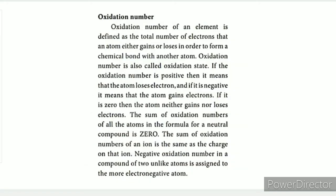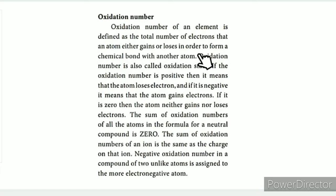Oxidation number — how do we define the oxidation number? It is the number of electrons that an atom gains or loses in order to form a chemical bond with another atom. The electron is lost or gained.